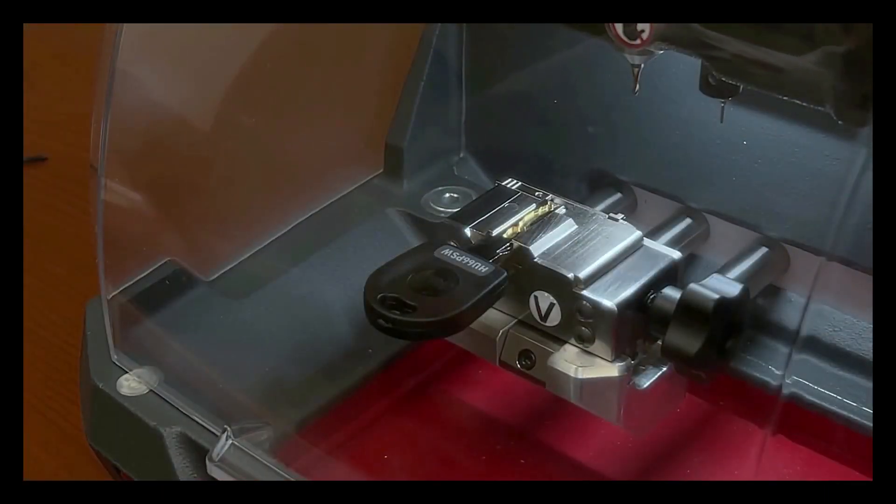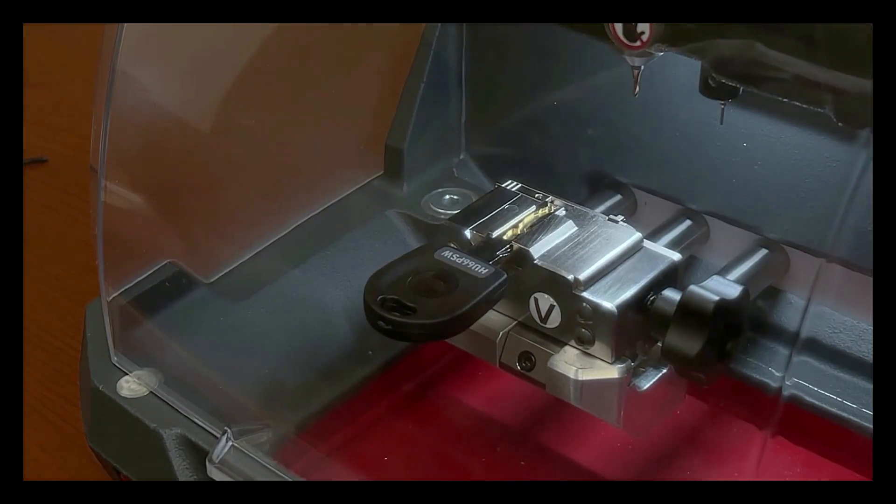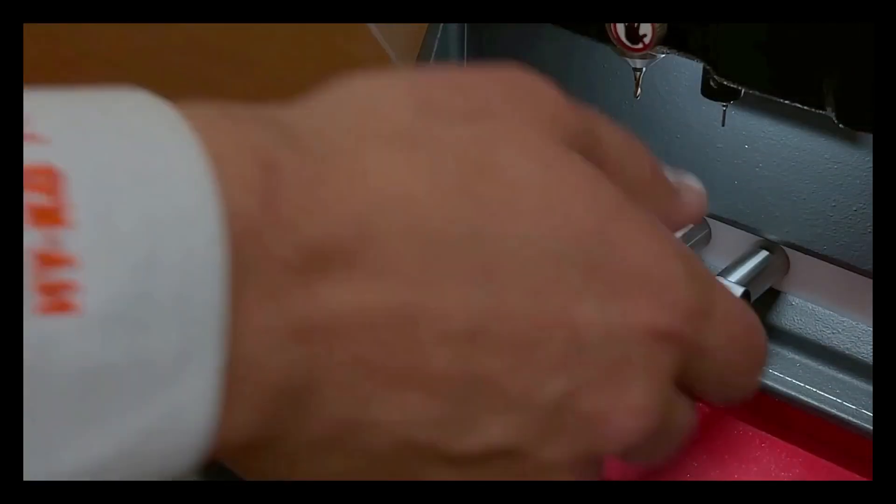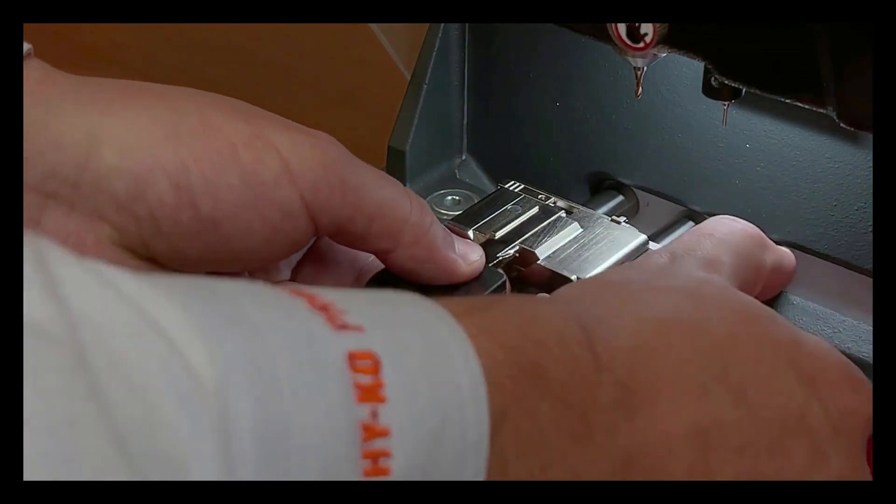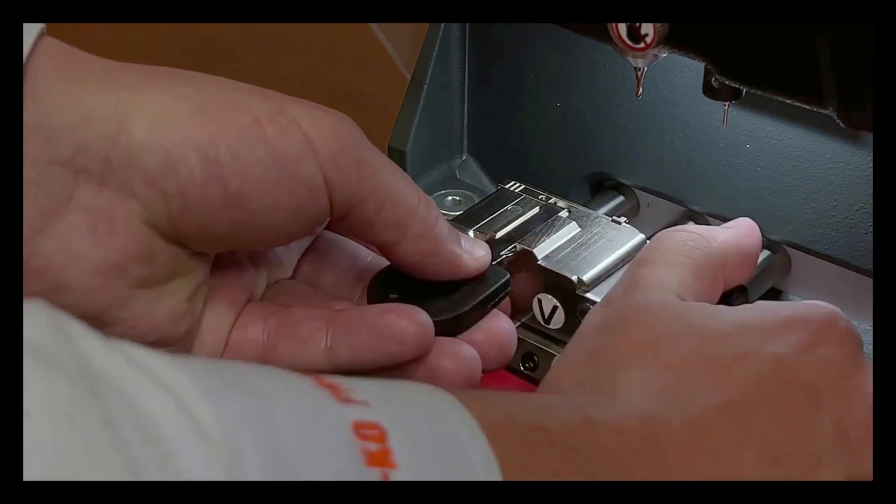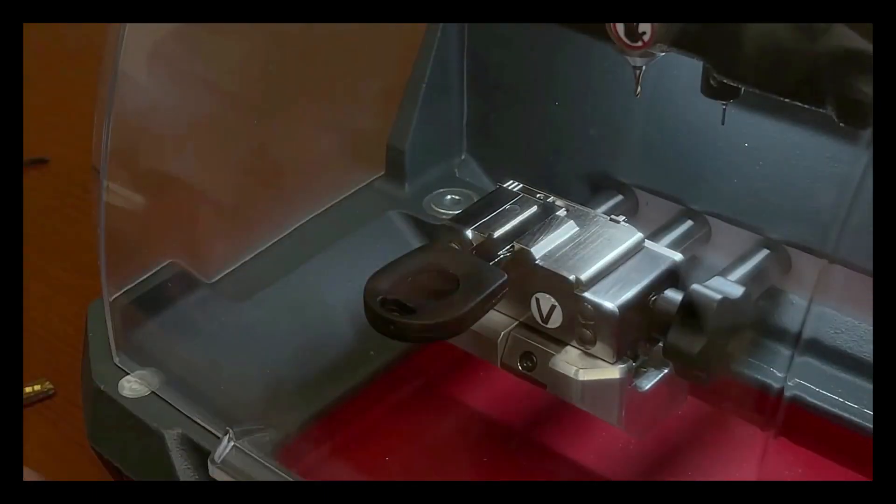Remove the customer key from the clamp and insert the new blank until the shoulders of the key stop against the clamp. Lower the shield and begin the cutting process.